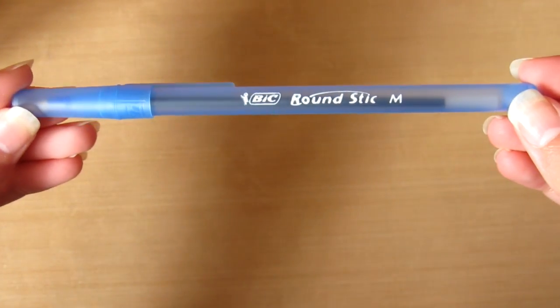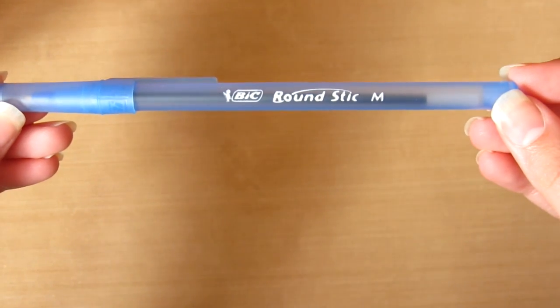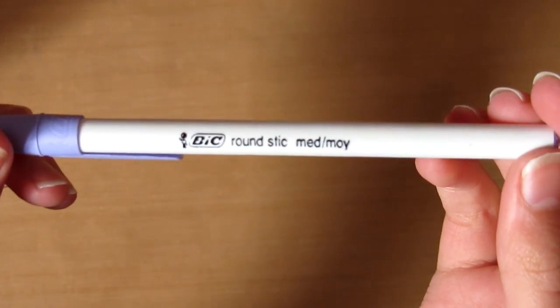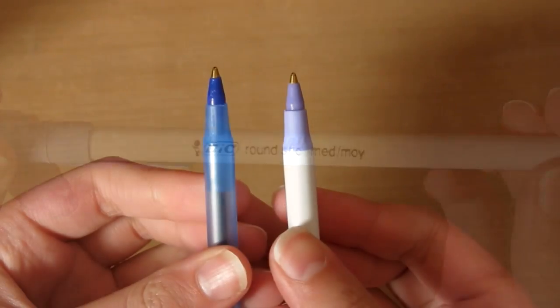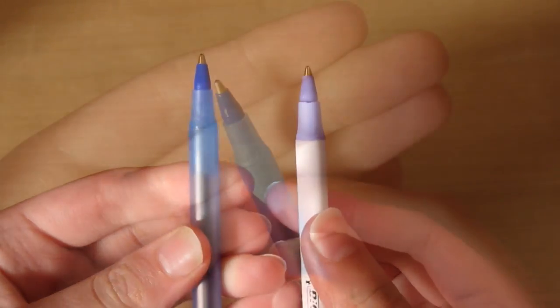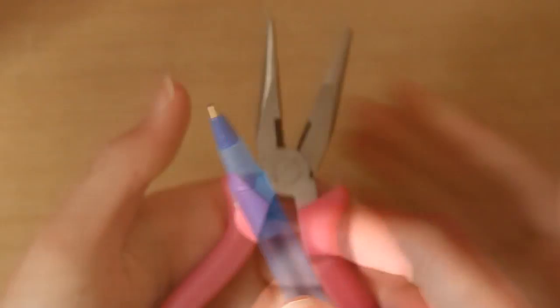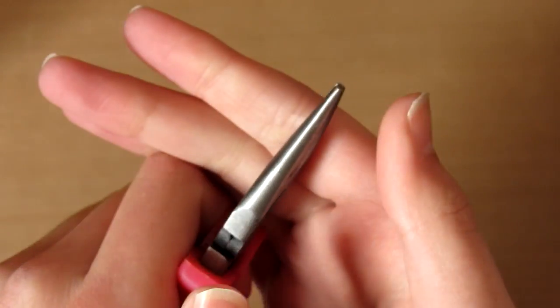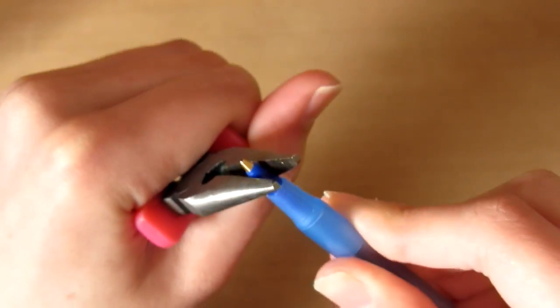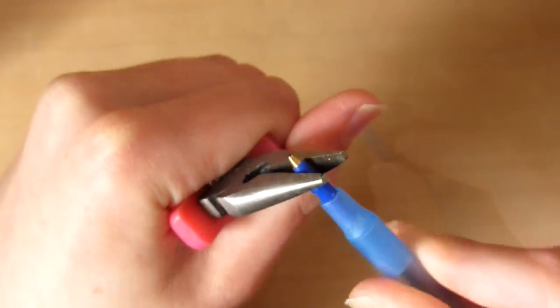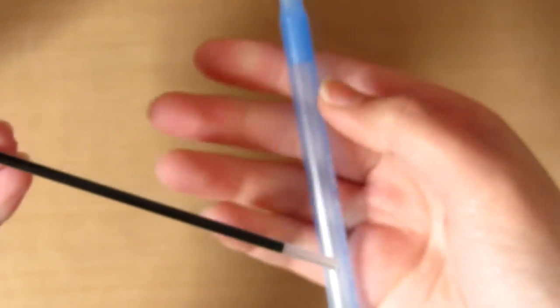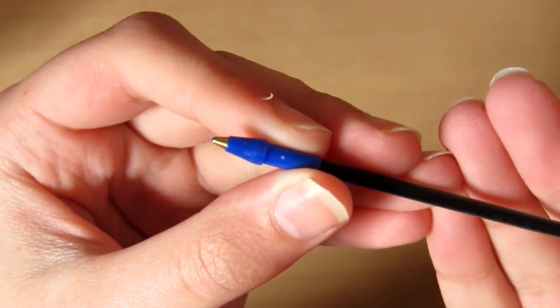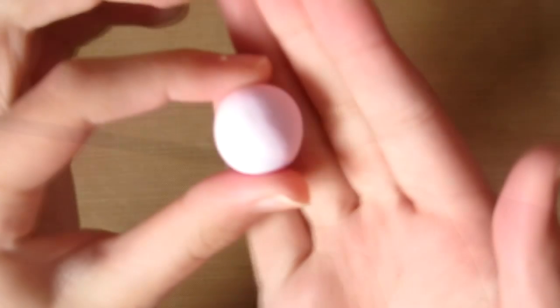First you want to take a pen. I'm using Bic round stick in size medium. I know these pens won't melt and I have blue and purple, but I'm sure you can find other pens that won't melt in the oven. So you just want to take some pliers and grab the end of the pen where the ink is and just twist it until the ink comes out, and then you want to keep that ink for later and make sure you don't spill it.